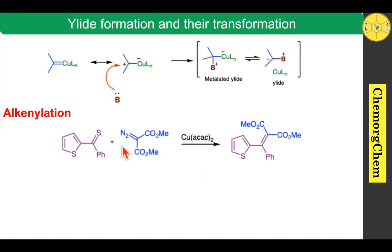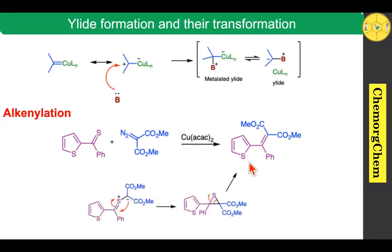Next, moving on to alkene formation reaction. When you take the thiocarbonyl compound with a diazo compound in the presence of copper acetylacetonate, it readily produces the corresponding alkene product. The thiocarbonyl sulfur readily attacks the positive center, producing the corresponding ylide. After formation of the ylide, ring closing takes place — the negative charge attacks and the pi electrons move toward the sulfur atom — which readily produces a thiirane compound. This thiirane compound is not very stable, and it readily collapses to produce the corresponding alkene product.